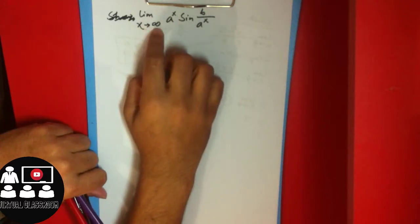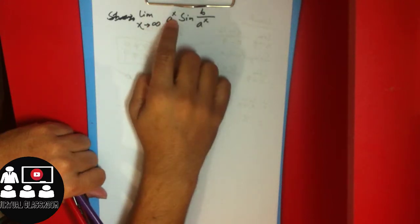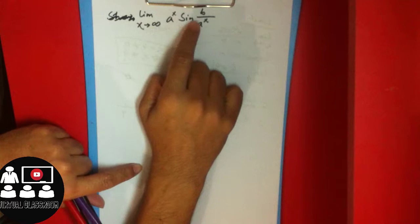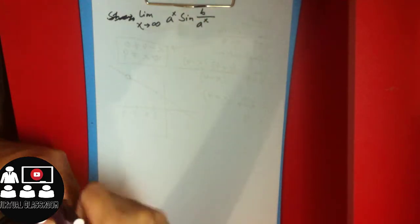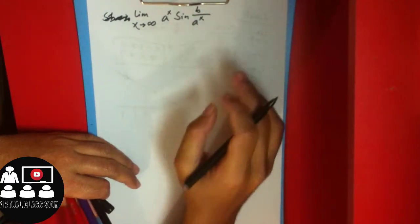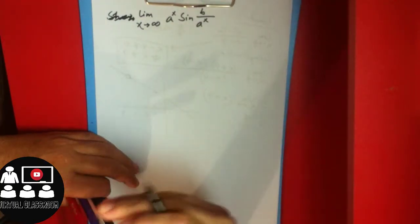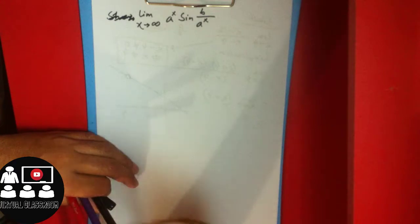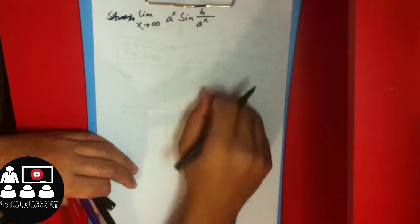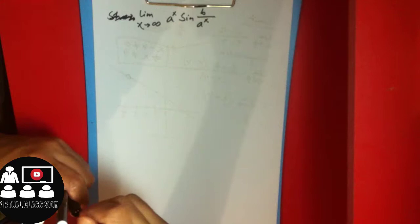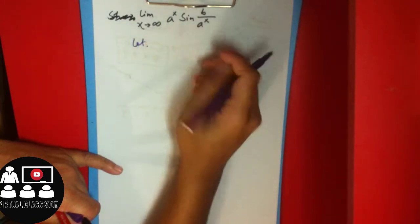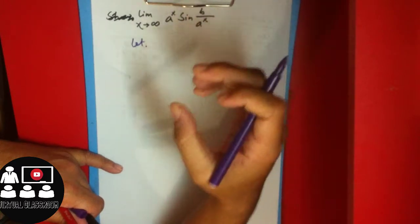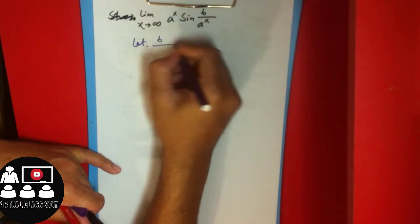Let's correct this example. Find the limit as x approaches infinity of x times sine(b) divided by e to the power x. We take this question and need to know how to handle the terminology. We also need to get the terms in the right form — let a to the power x be a variable.